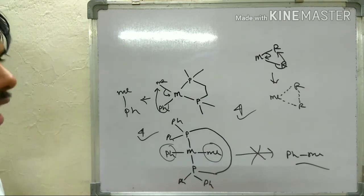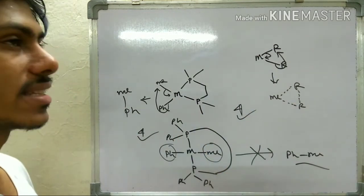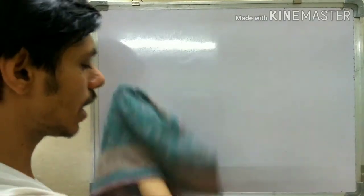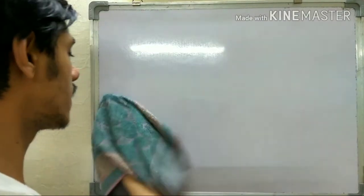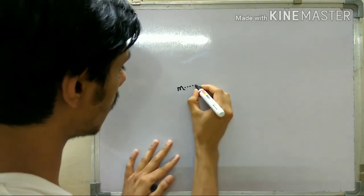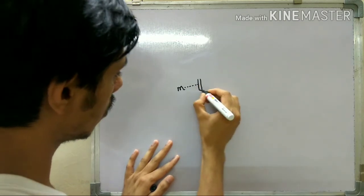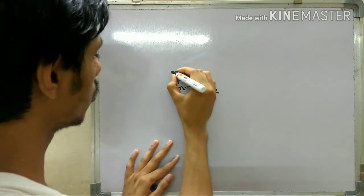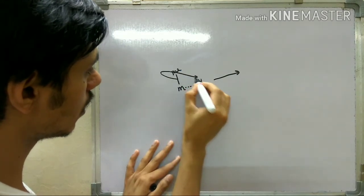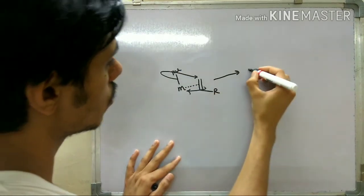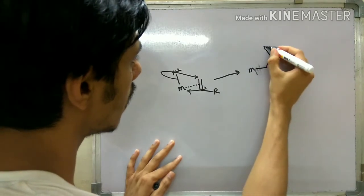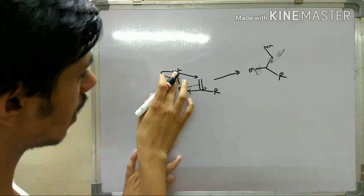Now let's move to migratory insertion and beta hydride elimination. Migratory insertion means: if you have a metal center with a pi ligand (an alkene attached) and another group such as a methyl group, it can undergo a reaction where the methyl shifts and a new bond forms between the two. So the methyl attaches to one end of the alkene and the R group is on the other end.